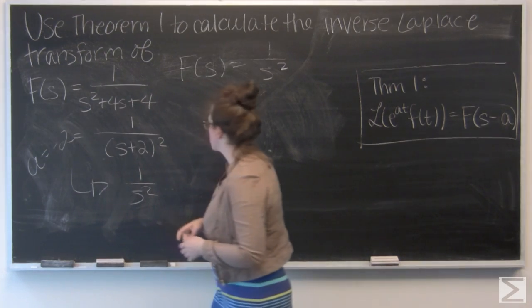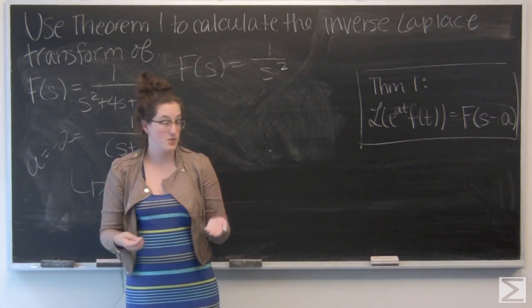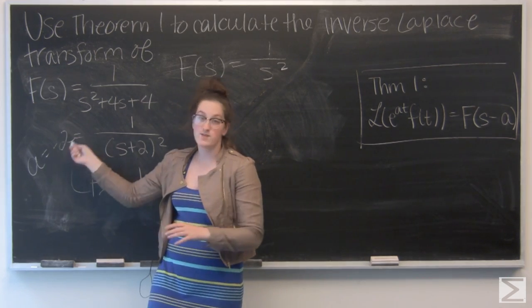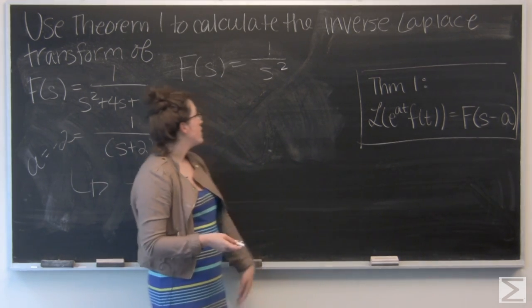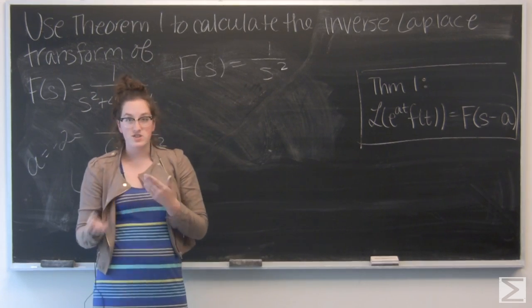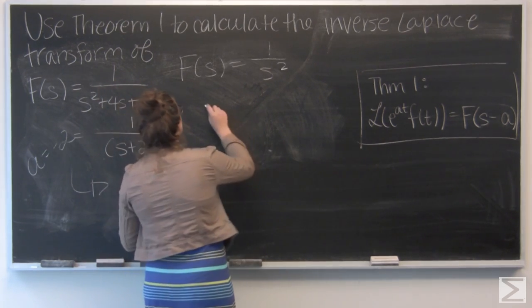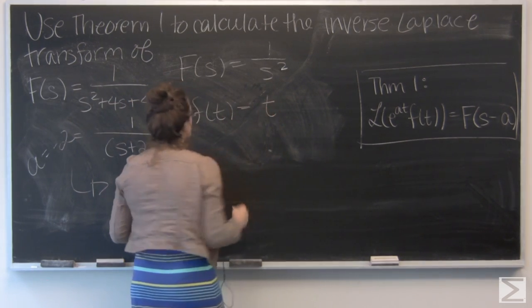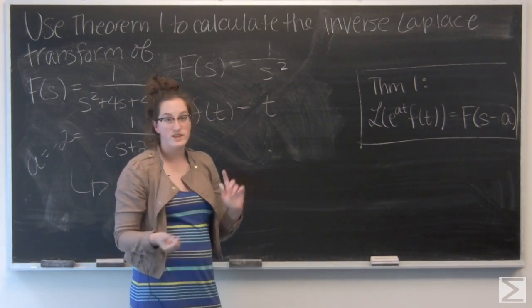So when I take the inverse Laplace transform of 1/s², I'm going to want to multiply it by e^(-2t). So the inverse Laplace transform of 1/s² is just t, and I want to multiply that by e^(-2t).